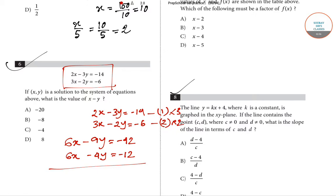Subtracting the double of equation two from the triple of equation one, the six x terms cancel out. Minus nine y plus four y gives minus five y. Minus forty-two plus twelve gives minus thirty. The negatives cancel and y equals thirty divided by five, which equals six. So the value of y is six.